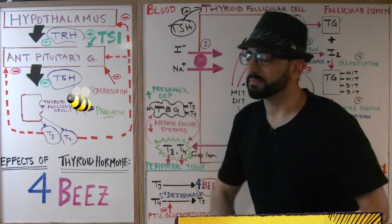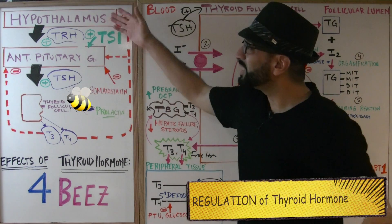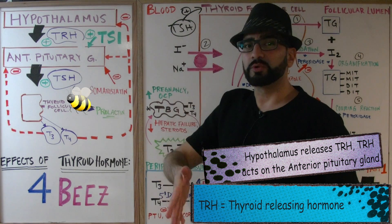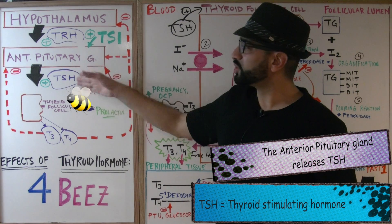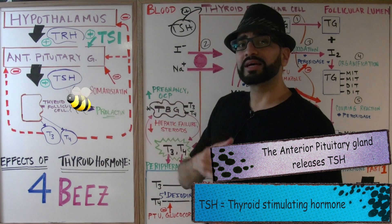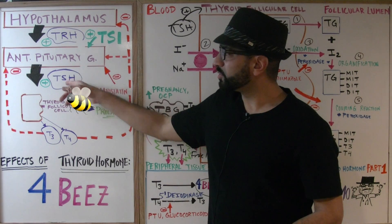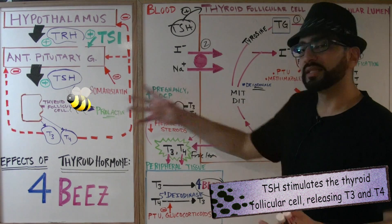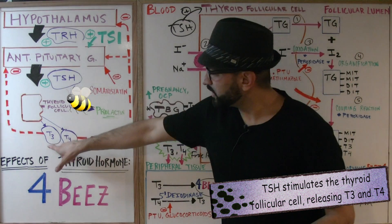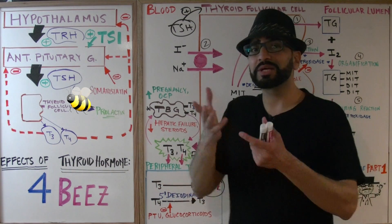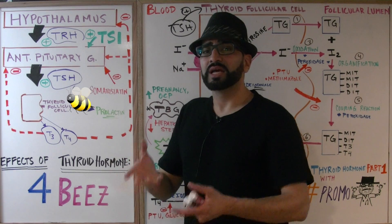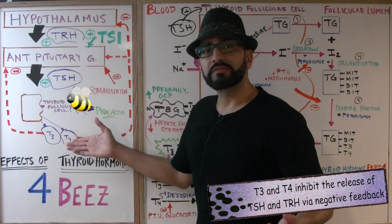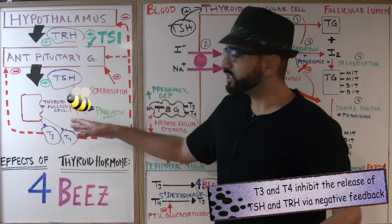Now let's move to the regulation. As always, the hypothalamus is the control center. The hypothalamus releases TRH — thyroid releasing hormone — which acts on the anterior pituitary gland, which releases TSH, the thyroid stimulating hormone. Once TSH reaches the thyroid follicular cell, the cell is stimulated to release T3 and T4.